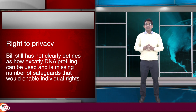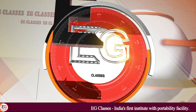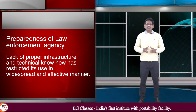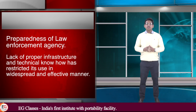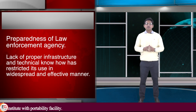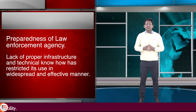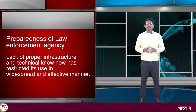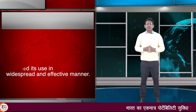Before this bill comes into existence as a law, it is lacking a number of safeguard provisions. The second point is the preparedness of law enforcement agencies in India. DNA technology was used earlier in criminal investigations in India; however, the outcome was not as positive as expected. The basic reason for this was the lack of infrastructure and technical know-how, which has led to a decline in using DNA technology in a more effective and widespread manner.